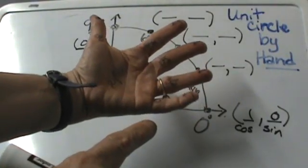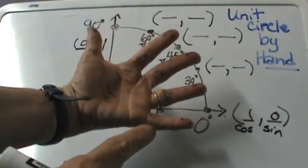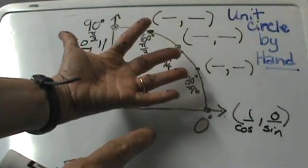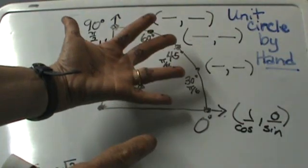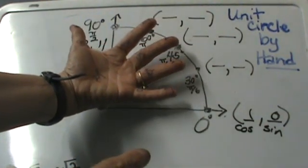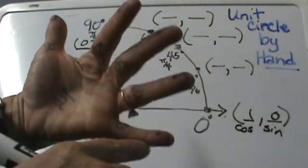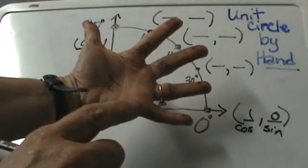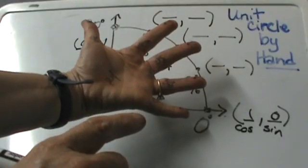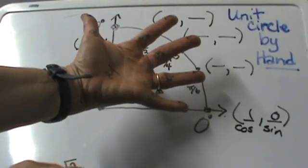My pinky is 90, and pointer finger is 60, 45 is the middle finger, and 30 is my ring finger. On the top of each finger I have a square root drawn. That is going to help remind me I need to take the square root of however many fingers I hold up.